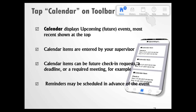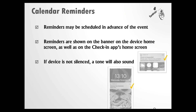When you tap on Calendar, that's going to display your upcoming future events, most recent shown at the top. Calendar items are entered by your supervisor — they can be meetings or when a fee is due, for example. Your supervisor can even set reminders for those events. Calendars are controlled completely by your supervisor; only he or she may add items or set reminders. This calendar cannot be synced with any other calendar you may currently be using. Reminders are scheduled in advance of an event and are shown on the banner on the device home screen as well as on the check-in app's home screen. If your device isn't silenced, you'll also hear a tone for that reminder. If you're using reminders or your agency requires it, make sure you stay logged into the app so you can actually receive those reminders.